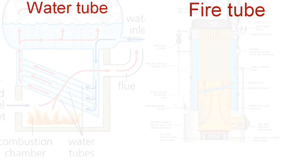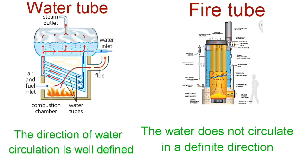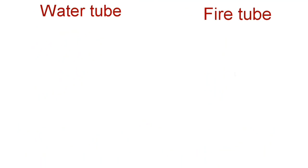In case of a water tube boiler, the direction of water circulation is well defined, whereas in case of a fire tube boiler the water does not circulate in a definite direction.